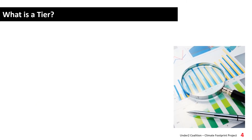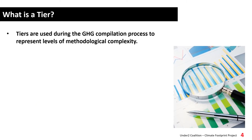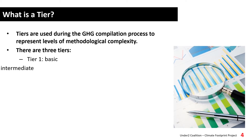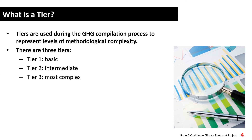So, what is a tier? Tiers are used to represent different levels of methodological complexity that can be applied when developing an emissions inventory. There are three tiers used for emissions calculations. Tier 1 is the most basic approach, tier 2 is intermediate, and tier 3 represents the most complex.